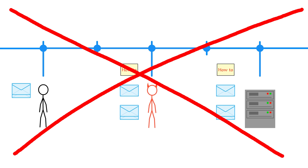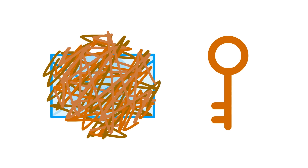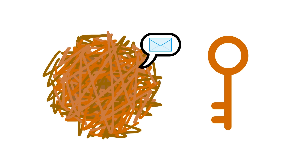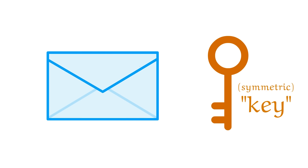You and the server need to know something that no one else does. Let's say that we scramble our data and incorporate a special number into the exact way that we scramble it. We do this in such a way that you need that special number in order to unscramble it afterward. Since this number is used to lock and unlock the data, let's call it a key.